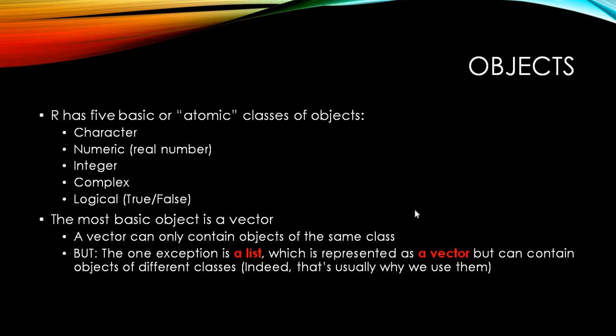The most basic object with which all these objects could be used is a vector. A vector can only contain objects of the same class. That is to say, a single vector can have either characters or numeric or integer or complex or logical, but it cannot have a mixture of all. You have to remember that a vector cannot have a mixture, it can have only one class of objects. This is very important and fundamental.